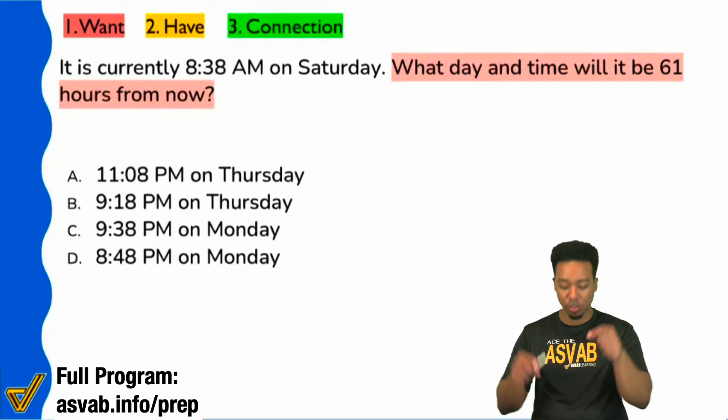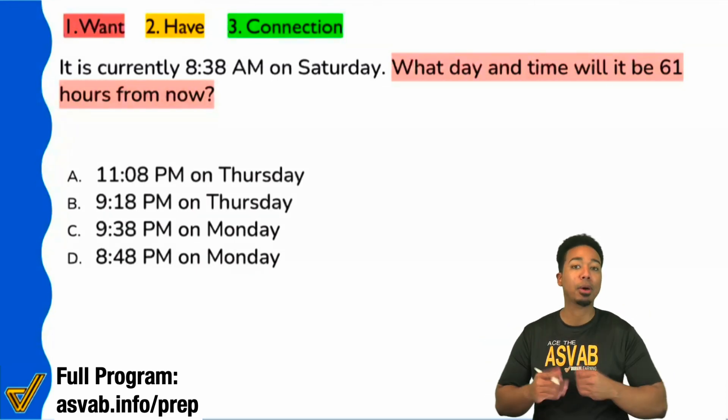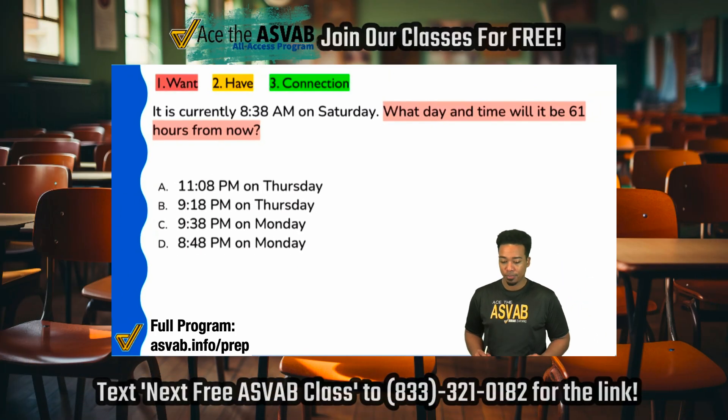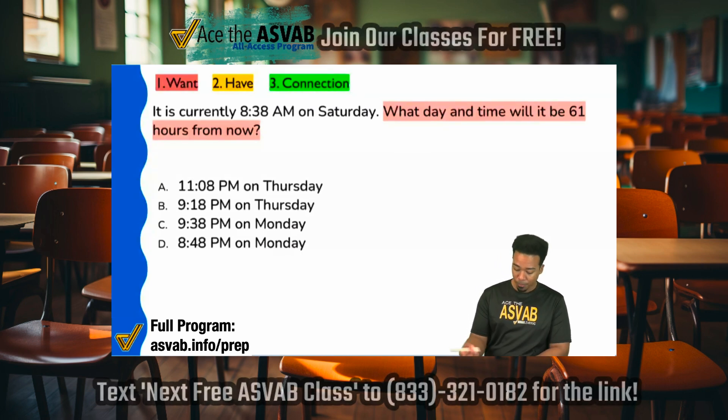What we need is the time and the day 61 hours from whatever right now is. Does that make sense? Just start off with the goal - we want to know what day and time it's going to be 61 hours from now. That's all I care about, that's my only concern.